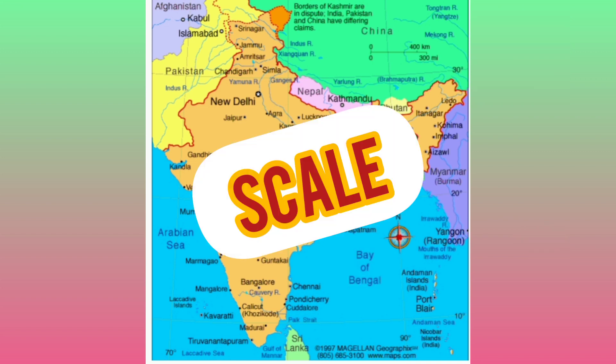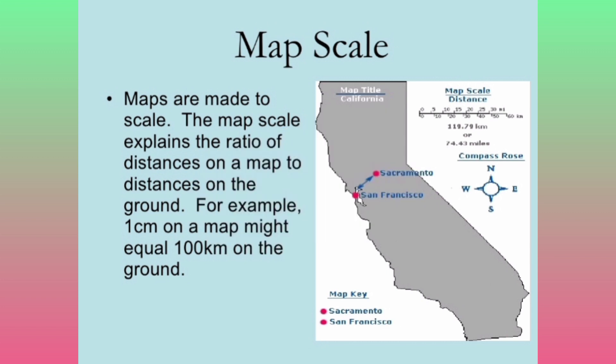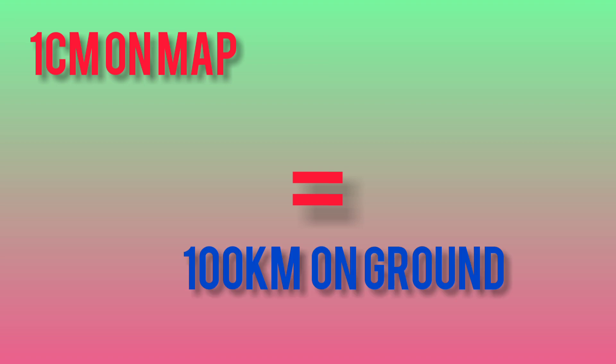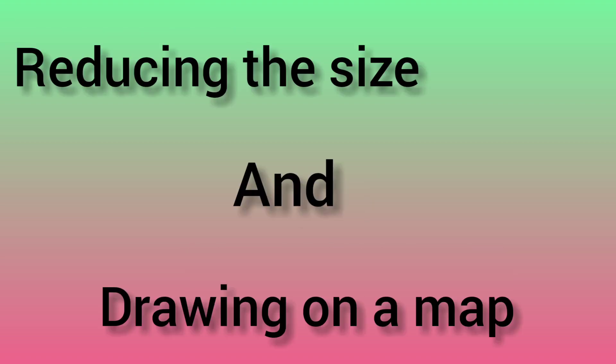Next we are going to discuss about scale. Map scale is the ratio of the distance. For example, 1 cm on a map is equal to 100 km on the ground. This means we are reducing the size and representing it on a paper.